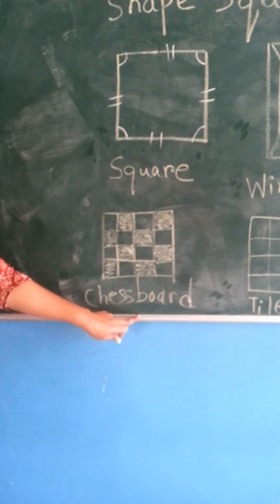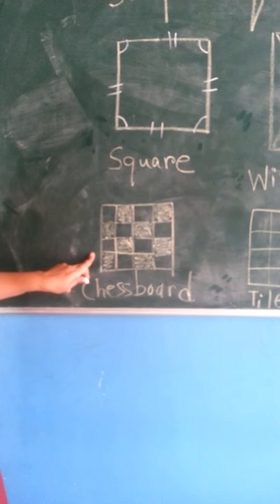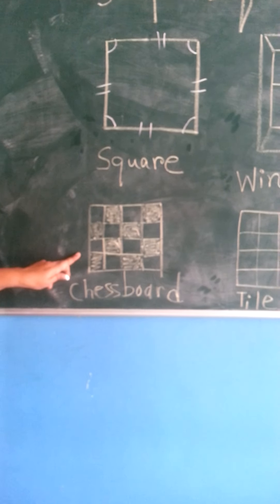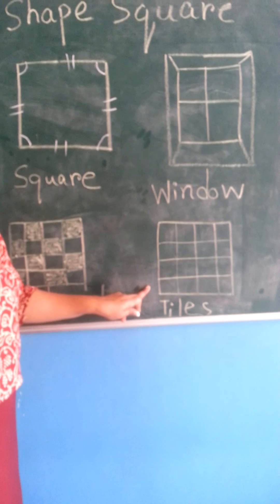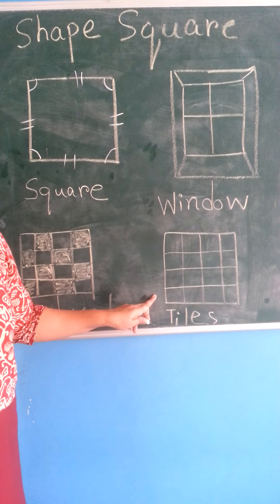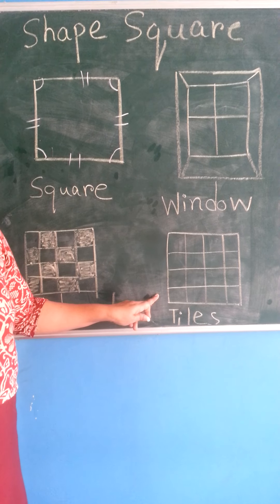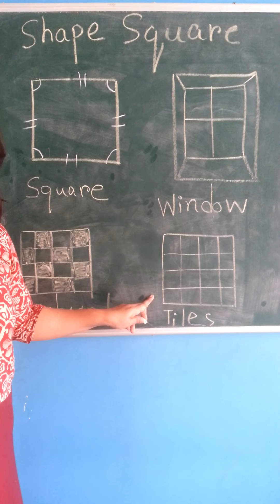See this chess board? Chess board kunsa shape ka hota hai? Square shape ka hota hai. See this tiles? Tiles, ghar mein jho floor pei jho tiles hootay hai. Aapke tiles kunsa shape ka hota hai? Square shape ka.